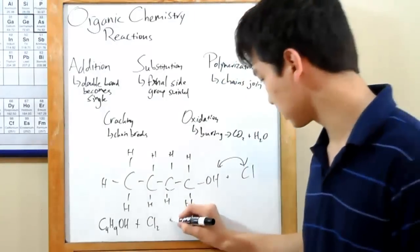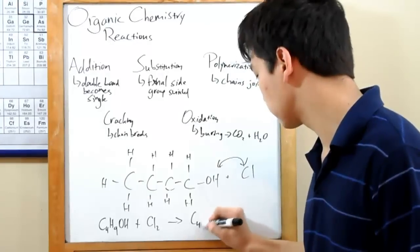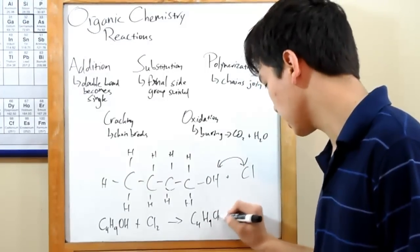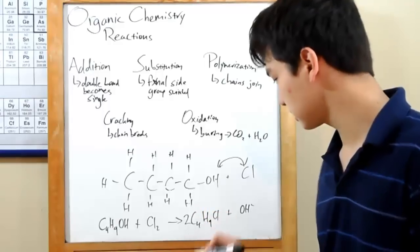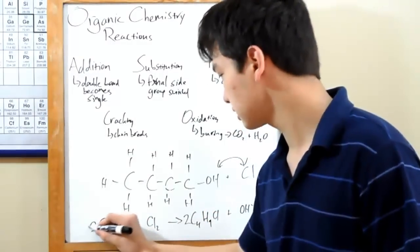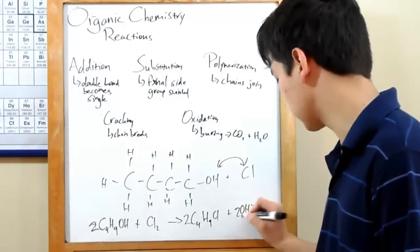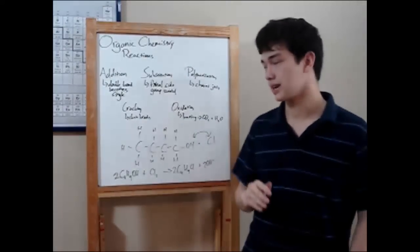Chlorine is diatomic, so Cl2, C4H9Cl, plus OH-. We have to balance everything. So chlorines are balanced here, carbons and hydrogens are balanced, and now OHs are balanced. And we're all good. So just make sure you've got a balanced reaction.